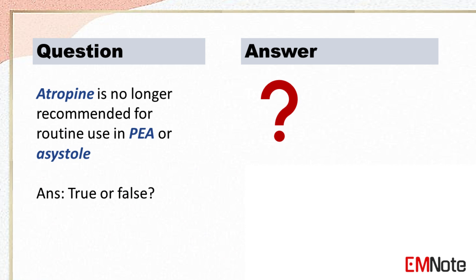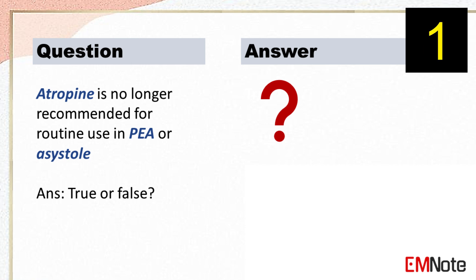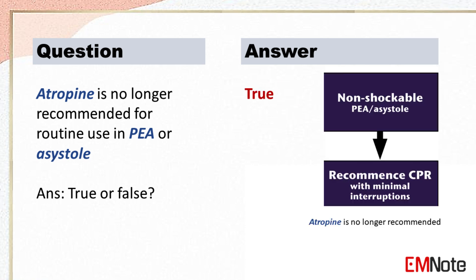True or false: Atropine is no longer recommended for routine use in PEA or asystole. True — Atropine is no longer recommended for routine use in PEA or asystole.